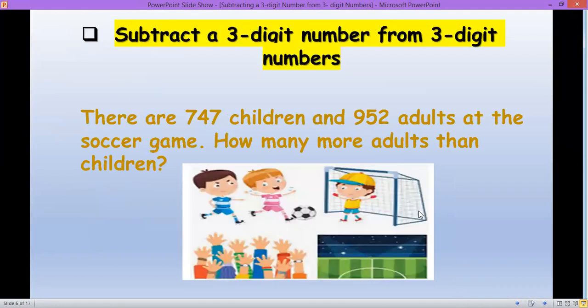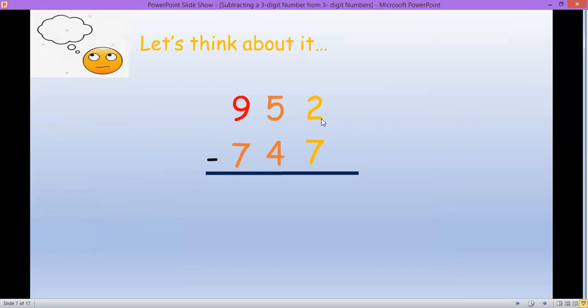Now let's think about this. There are 747 children and 952 adults at the soccer game. How many more adults than children? So we are comparing the number of adults and children. To find the differences, we have to subtract them. Seven take away from two, or two minus seven - you cannot take away seven from two, so you must regroup the two or borrow from five.